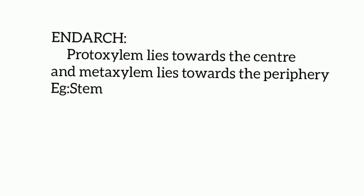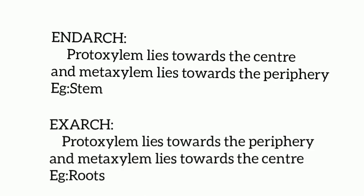Next, we move on to endarch. In endarch, the protoxylem lies towards the center and metaxylem lies towards the periphery. This is found in the stem. Next, we have exarch. Here, the protoxylem lies towards the periphery and metaxylem lies towards the center. This type is seen in roots.